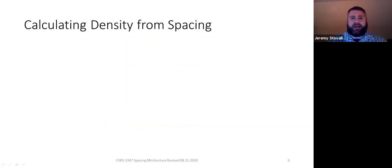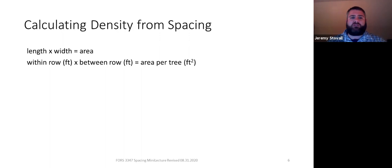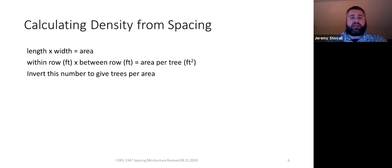Let's look at the case where you know the spacing and need to calculate the density — the simpler of the two equations. The area of a rectangle is simply its length times its width. In our case, the within-row spacing and the between-row spacing are our length and width. We multiply them together — both measured in feet — giving us the growing space area per tree in square feet. To calculate density from spacing, you take the inverse of this number — one divided by it — which gives you trees per square foot.